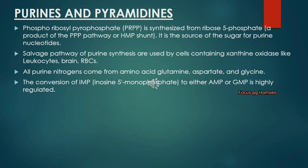There is a term called the salvage pathway of purine synthesis. It is used by cells like leucocytes, brain and RBCs. The conversion of IMP (inosine 5-monophosphate) to either AMP or GMP — adenosine monophosphate and guanosine monophosphate — is highly regulated.